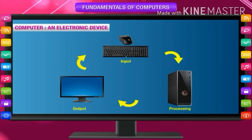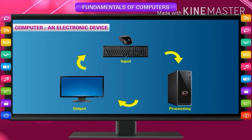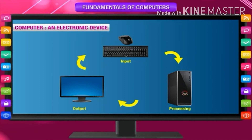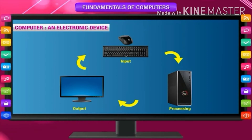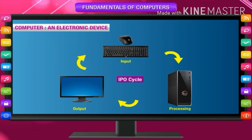Computer — an electronic device. A computer is an electronic device that processes raw data with the help of a program and produces meaningful information. These functions are performed in a cycle called the Input-Process-Output Cycle, or IPO.